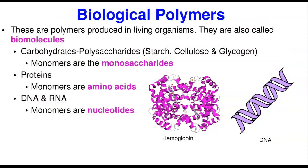Now the last topic for today: biological polymers. We've been talking about polymers synthesized outside your body, but biological polymers are produced in living organisms. There are three main biological polymers. First, carbohydrates — also called polysaccharides — are built from the monomeric unit of monosaccharides. Common polysaccharides include starch, cellulose, and glycogen. Other examples include chitin.